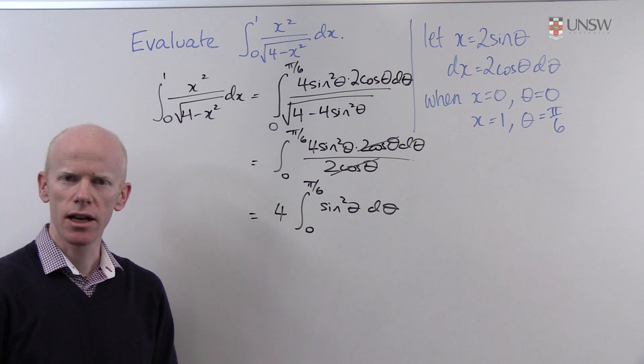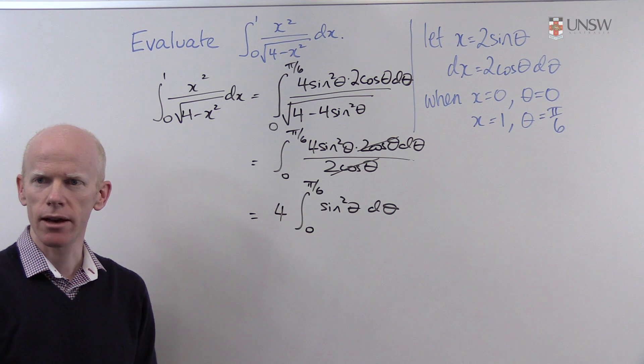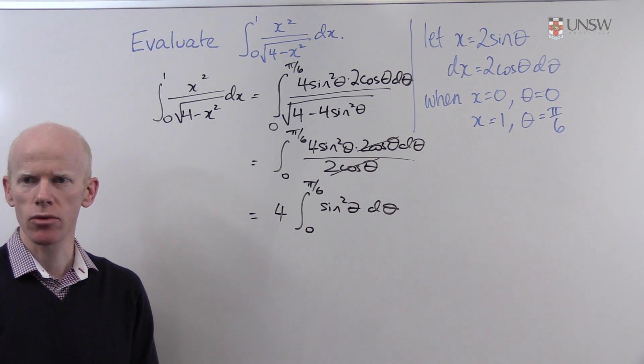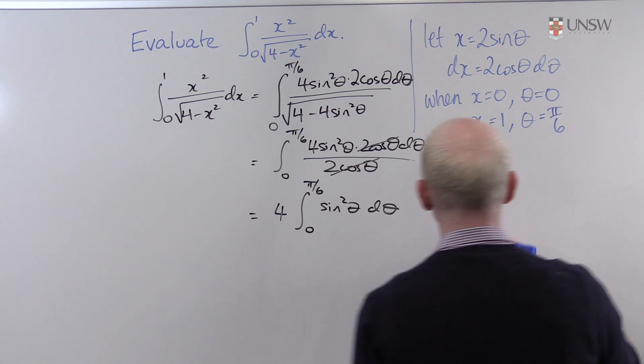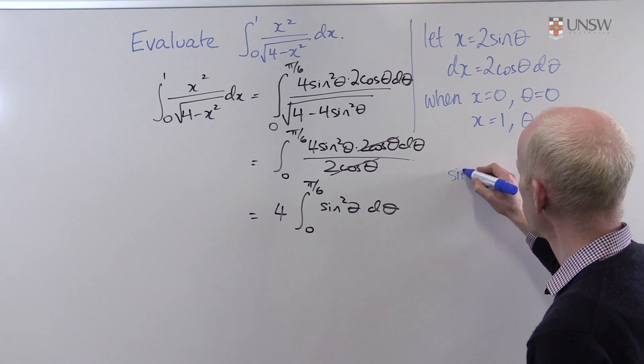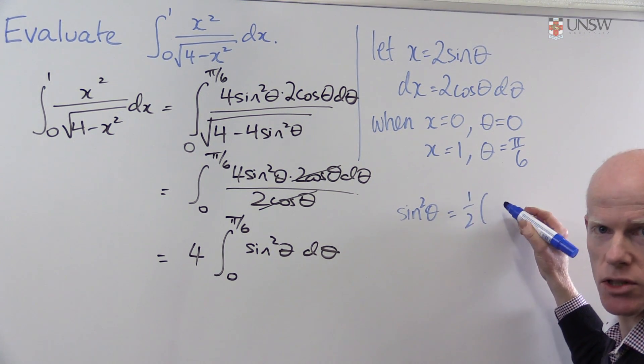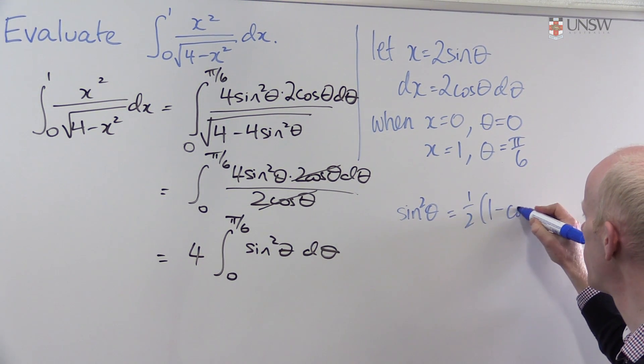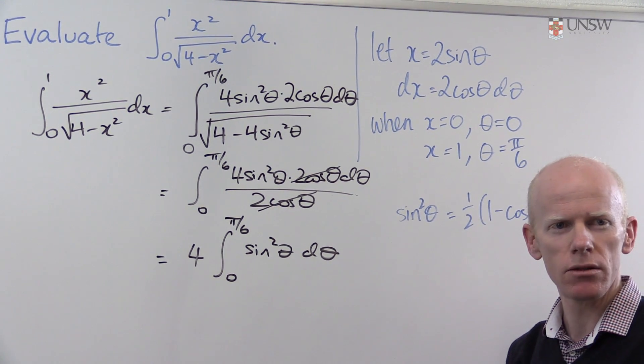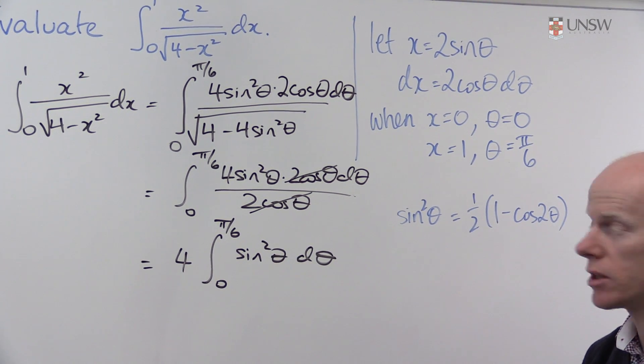The next task is to evaluate the integral of sin² θ. For this, we use the double angle formula for cosines. We have sin² θ equals 1/2(1 - cos 2θ). This is a result you need to be comfortable using because it comes up quite frequently when integrating trigonometric expressions.